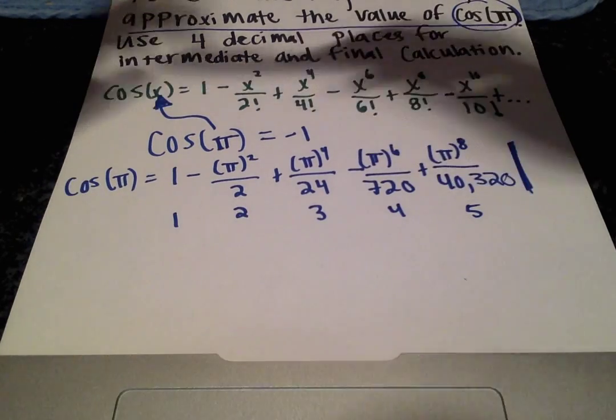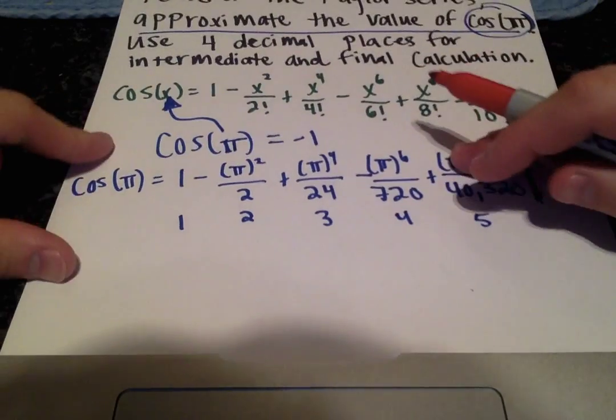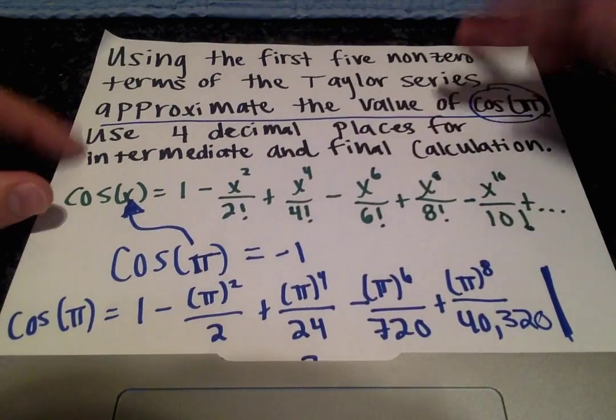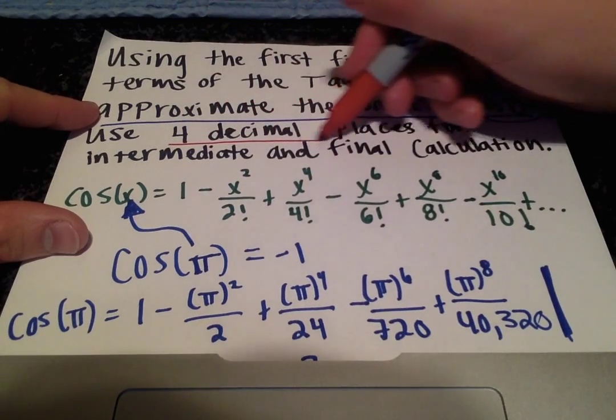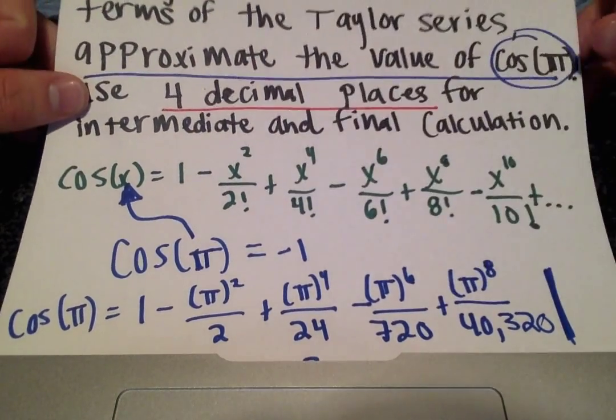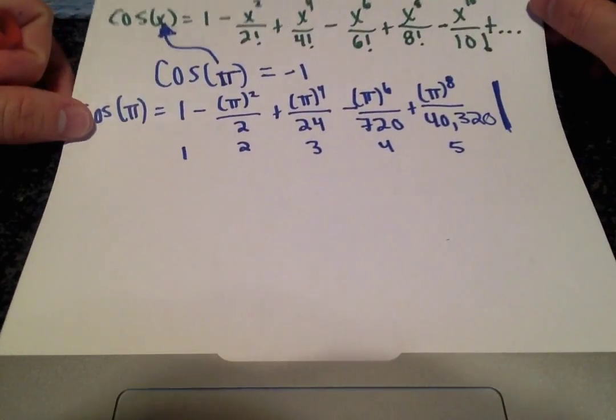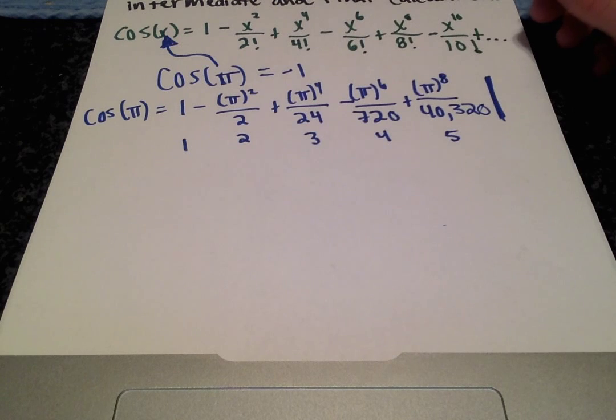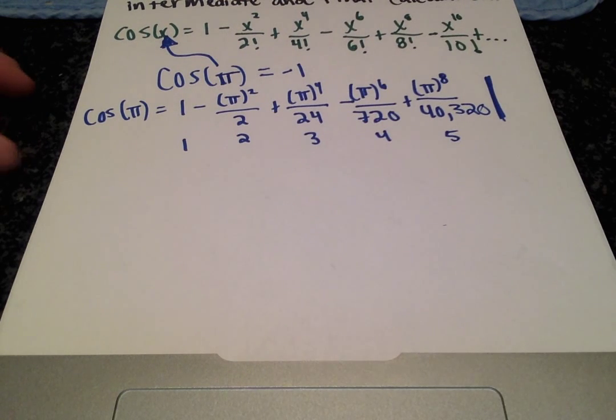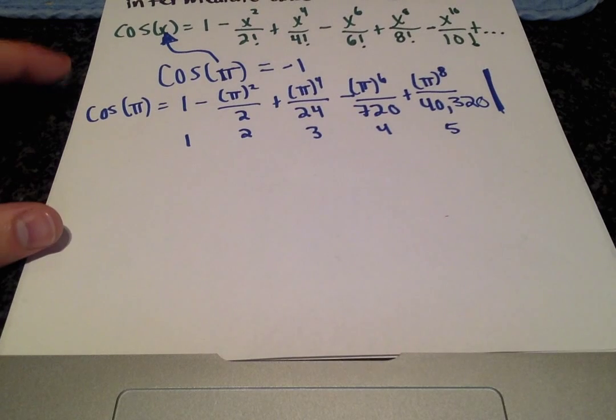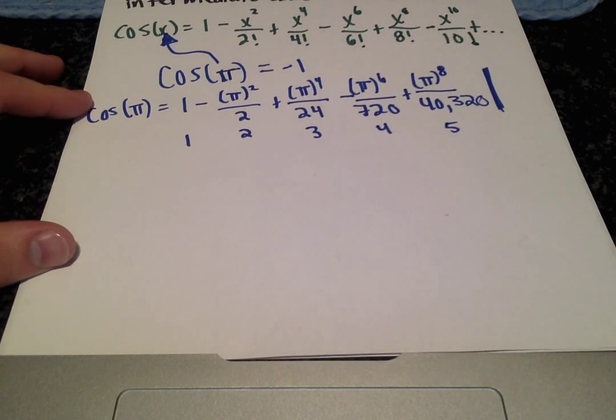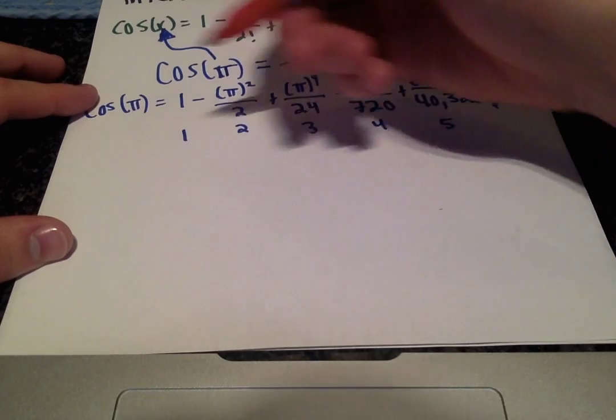And, the next important detail to note in the problem statement is that they want us to record four decimal places for each intermediate and final calculation. So, a lot of times, if you're doing this, they will restrict you to certain calculators, so you can't just plug the function in and calculate it easily. They want it to be a struggle and really difficult to calculate.